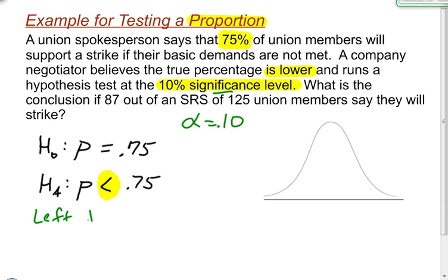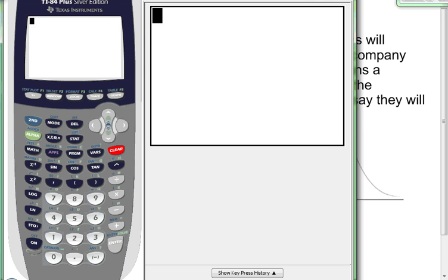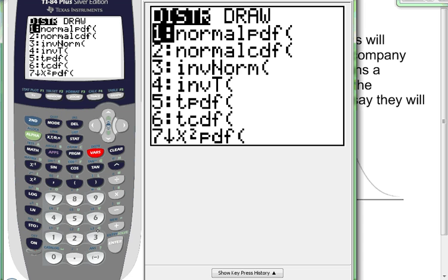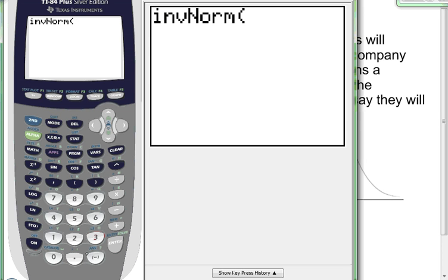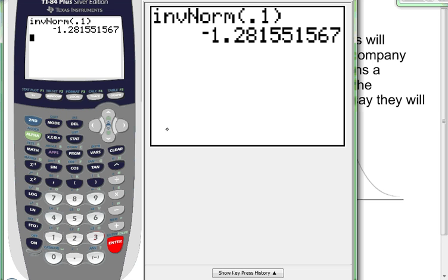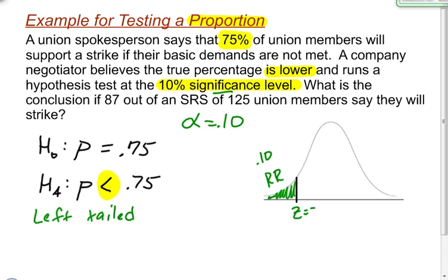This is a left-tailed test. I'm going to draw a cutoff point for my rejection region. The area to the left of that cutoff point is going to be equal to my alpha — so this rejection region is 0.10. I'm then going to use my calculator to find the z-score that cuts off that rejection region. On my calculator, I go inverse norm: second, vars, number three, inverse norm. The calculator wants the area to the left, so inverse norm for 0.1, and when I hit enter, I find my z-score to be negative 1.28.